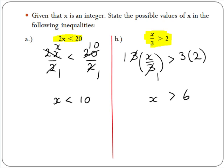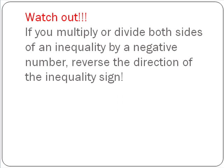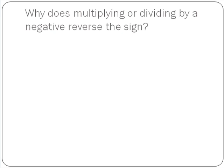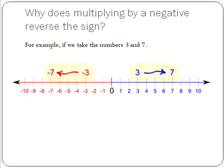We need to be careful when multiplying or dividing: if we multiply or divide both sides of an inequality by a negative number, then we need to reverse the direction of the inequality sign. Why does multiplying or dividing by a negative number reverse the sign? We just need to look at the number line. For example, take the numbers 3 and 7. From 3 to 7 is an increase, so 7 is greater than 3. If we multiply both by minus 1, we get minus 3 and minus 7. But from minus 3 to minus 7 is a decrease, so minus 7 is less than minus 3. The inequality sign reverses from greater than to less than.